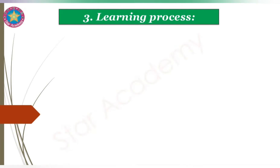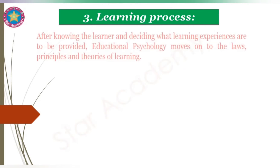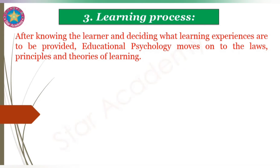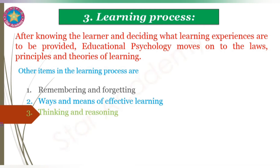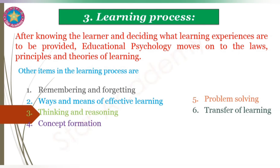Number three: the learning process. After knowing the learner and deciding what learning experiences are to be provided, educational psychology moves on to the laws, principles, and theories of learning. Other items in the learning process include remembering and forgetting, ways and means of effective learning, thinking and reasoning, concept formation, learning transmission, problem solving, transfer of learning, and perceiving.